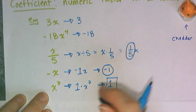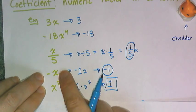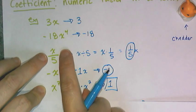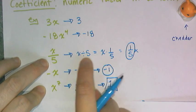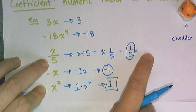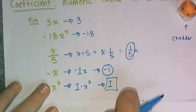So remember, it's a numeric factor. If it looks like it's missing, it's a one. If it's X divided by some number, you have to change it so it's a fraction times X, and then the fraction becomes your coefficient.